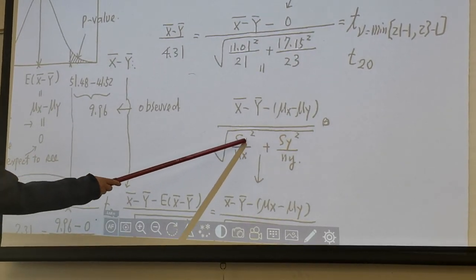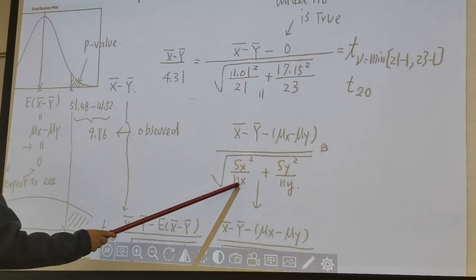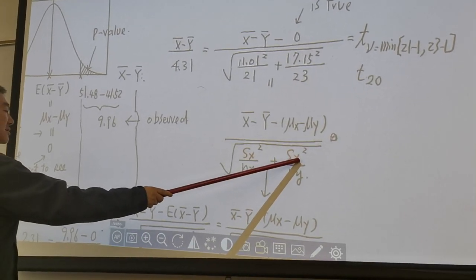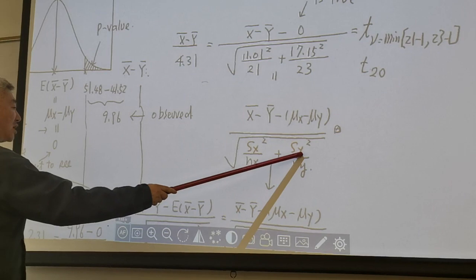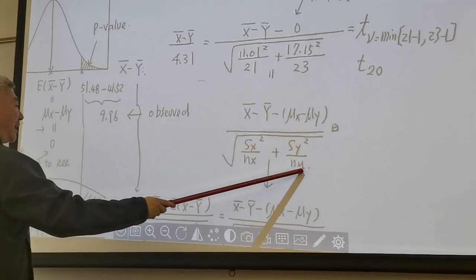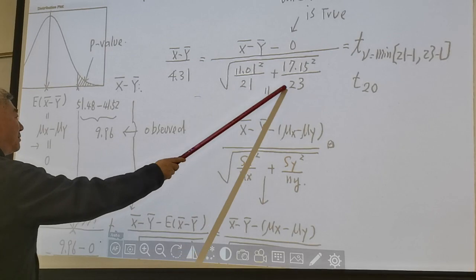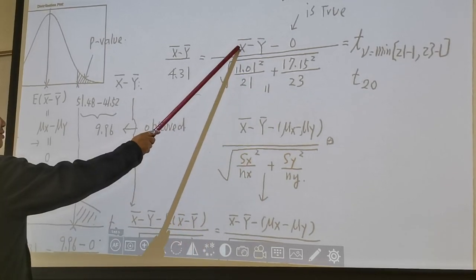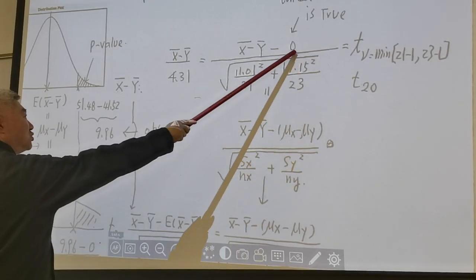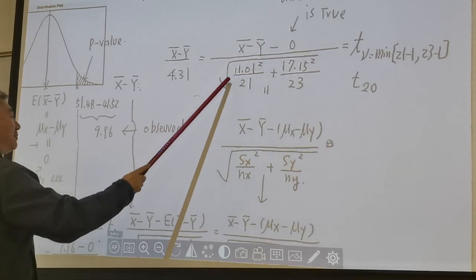From the table I just showed you, observed sx is 11.01. Nx, sample size of the treatment group is 21. And sy, the observed standard deviation for y group, for control group, 17.15. It's squared, that's variance. Divided by ny, the sample size for the control group, 23. You plug in those numbers. And the numerator, x-bar minus y-bar, subtract under H0 is true, mu x minus mu y equal to 0. So this is x-bar minus y-bar divided by this term.